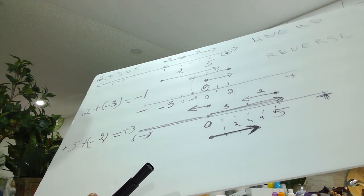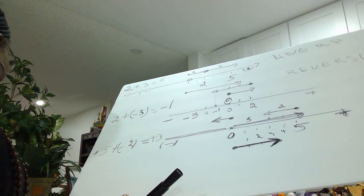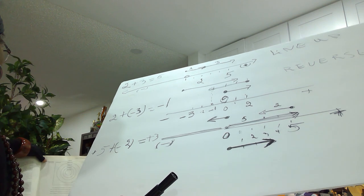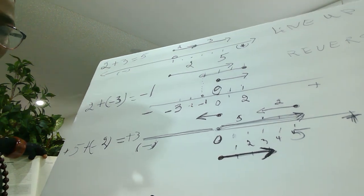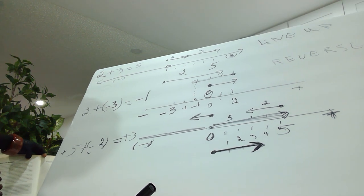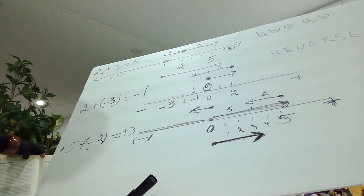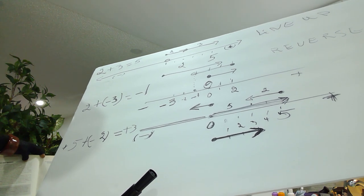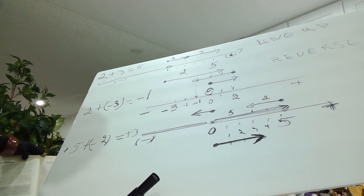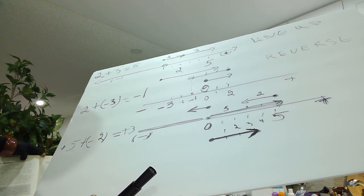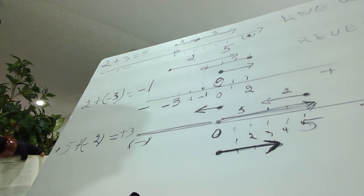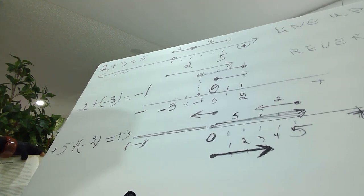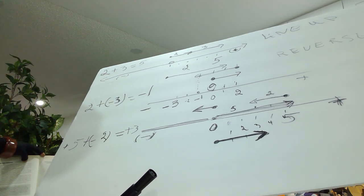So we have the natural numbers, or counting numbers: one, two, three, four, five, six, seven. And then the whole numbers — you get the whole numbers when you add zero: zero, one, two, three, four, five, six, seven.